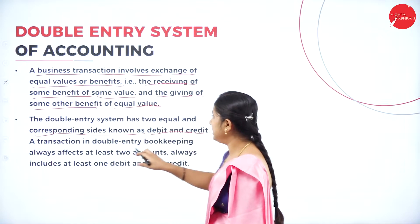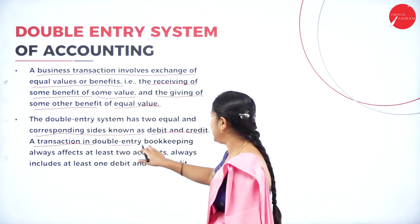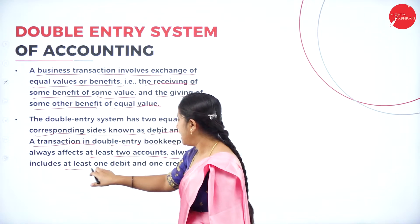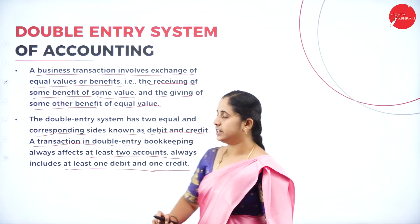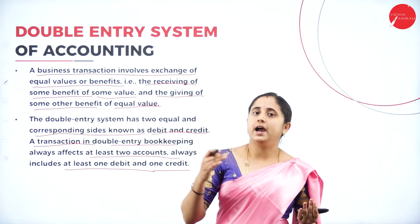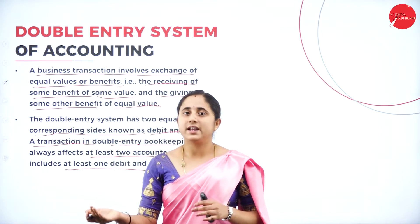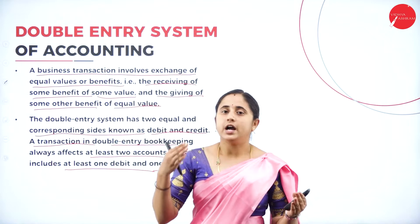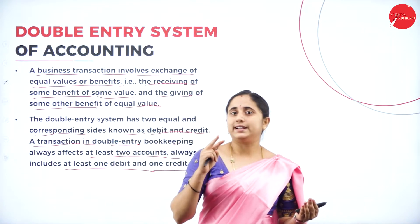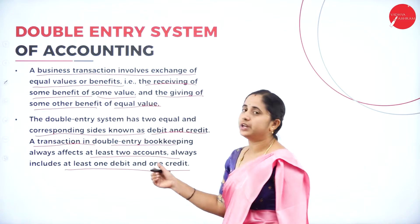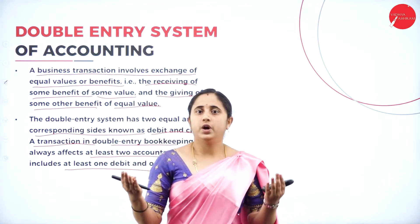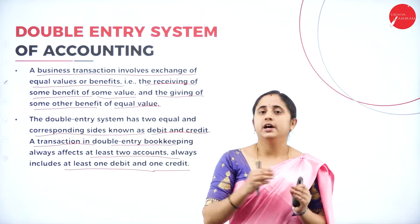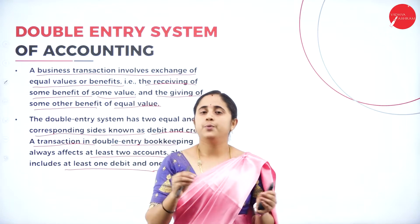A double entry system has two equal and corresponding sides known as debit and credit. A transaction in double entry bookkeeping always affects at least two accounts — it always includes at least one debit and one credit. It affects at least two accounts: one must be debited and one must be credited.